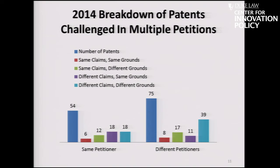It's broken down by same claims/same grounds, same claims/different grounds, different claims/same grounds, and different claims/different grounds — pretty granular. You can see there's a sizable number of petitions challenging the same claims and, in fact, challenging on the same grounds. These are the 54 patents with multiple challenges by the same petitioner.